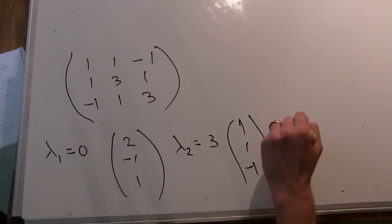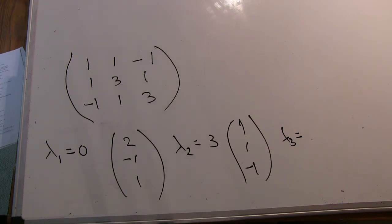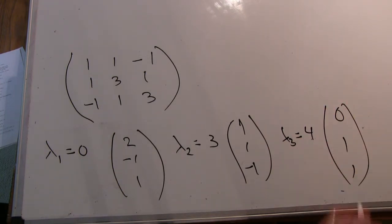And then for the last one, lambda 3, it was 4. And then the vector was 0, 1, 1. And we calculated all these.